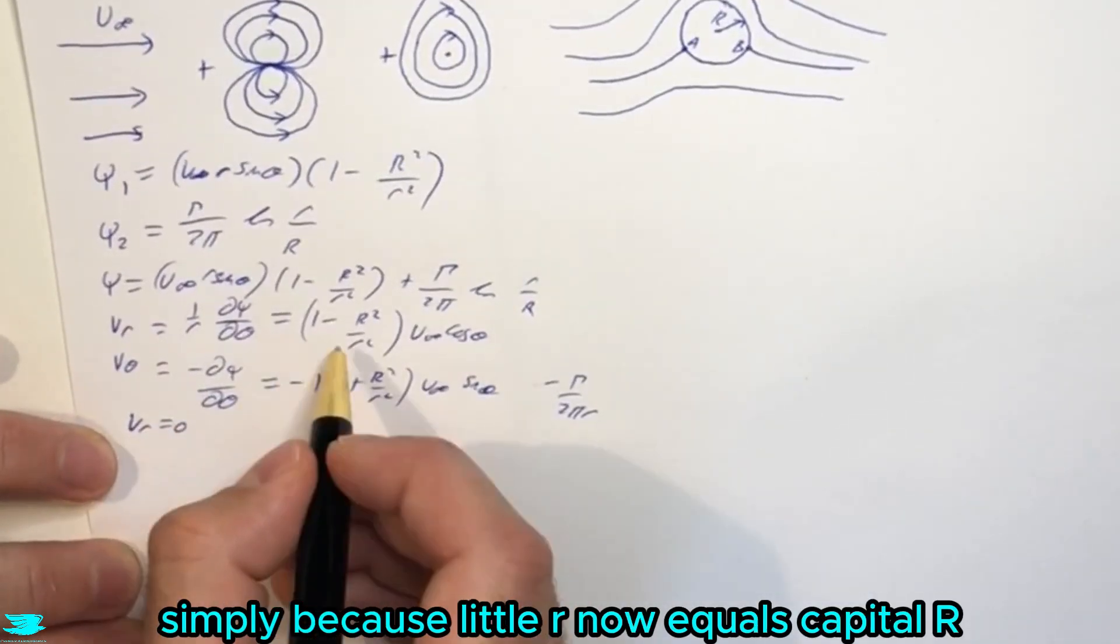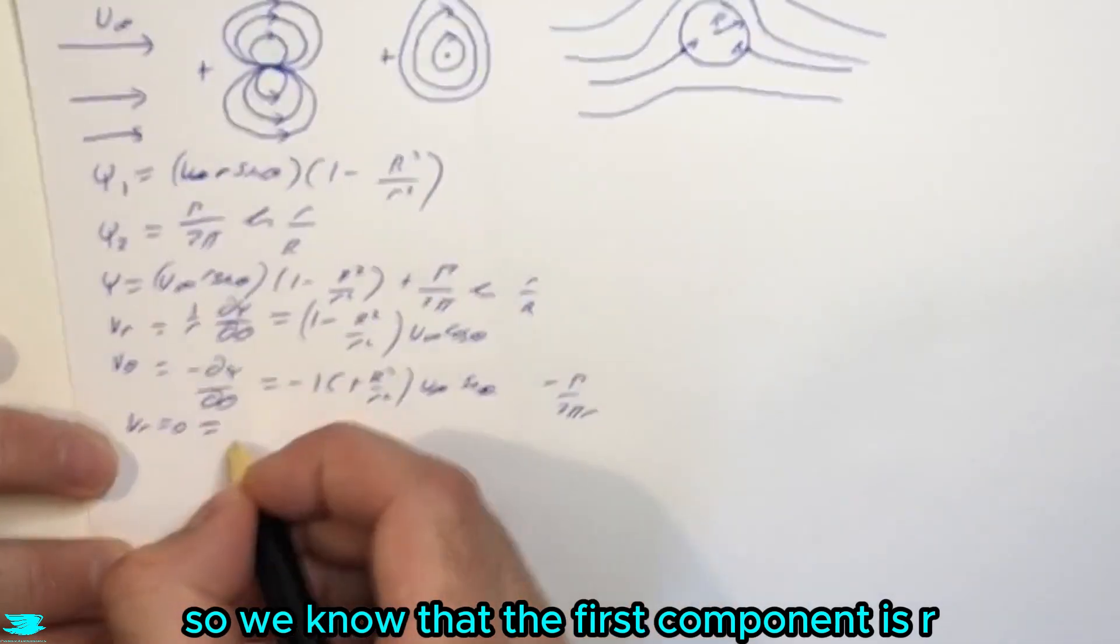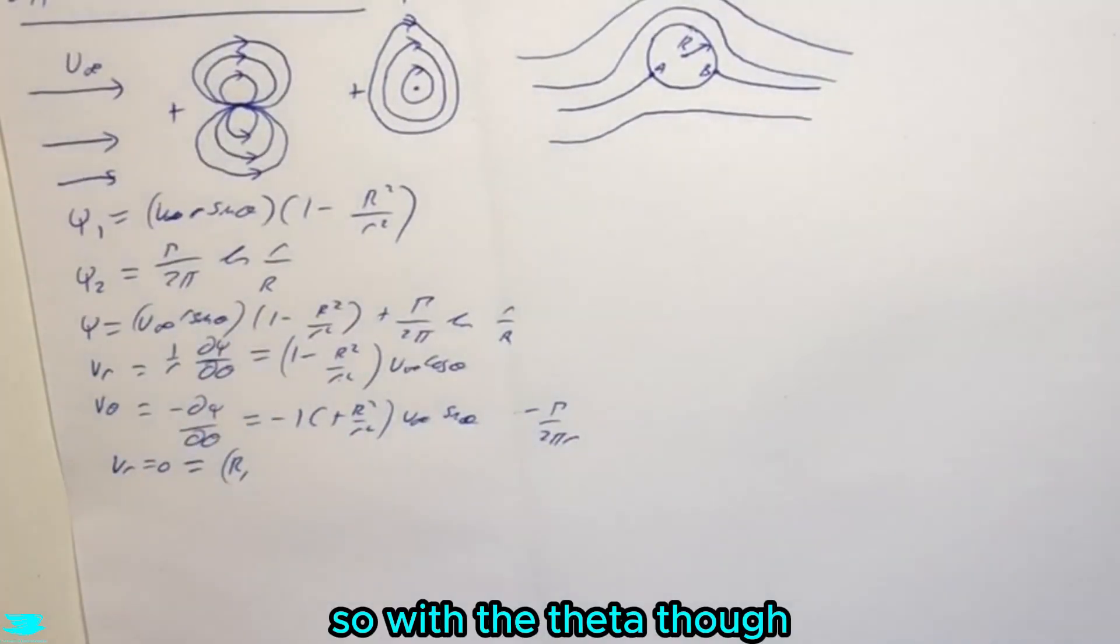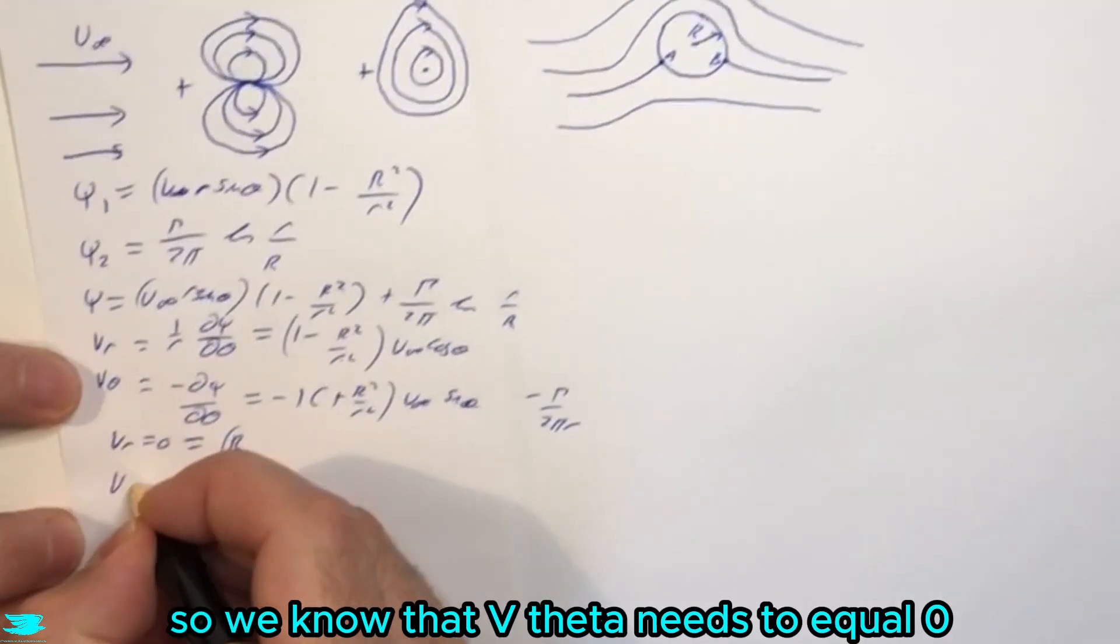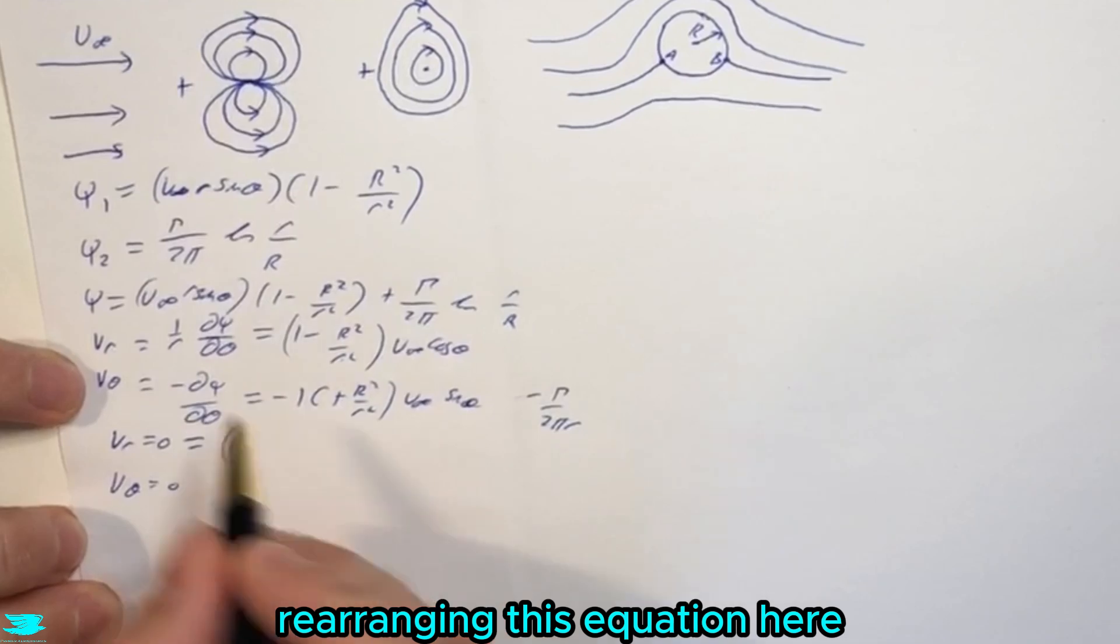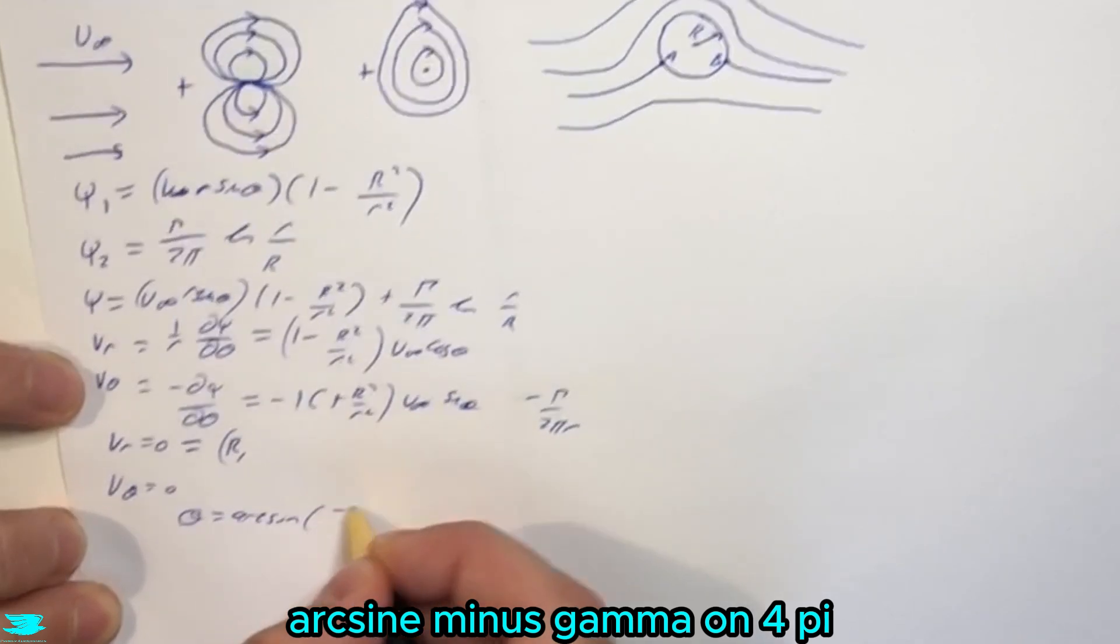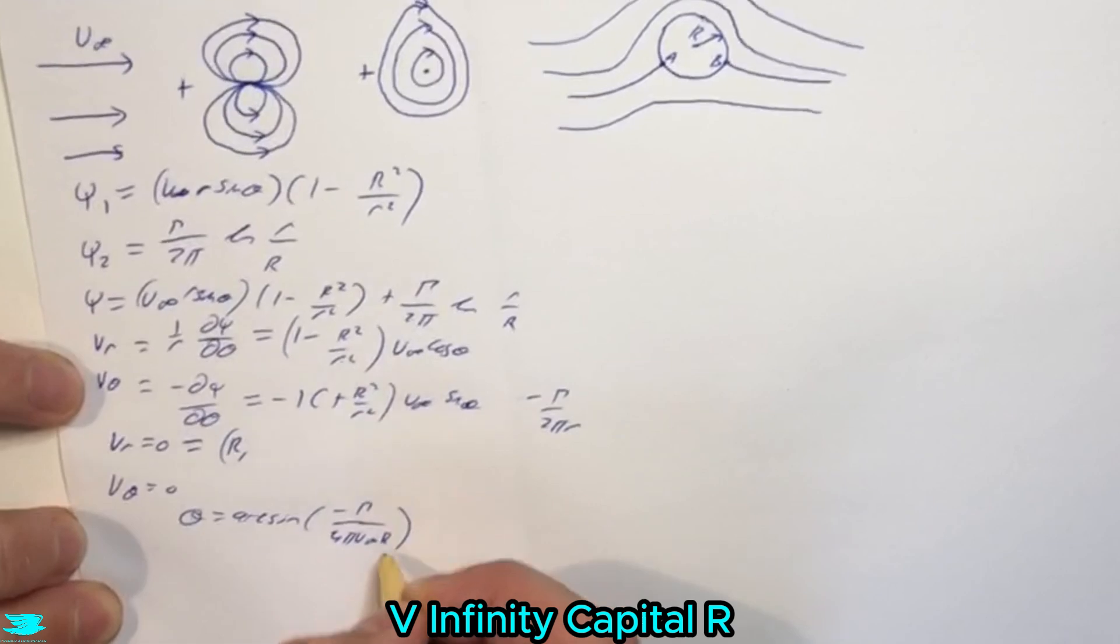So anywhere on this surface, we know that the vr component, this component, is going to be zero. So vr equals zero, simply because little r now equals capital R, so that goes to zero, and the entire thing goes to zero. So we know that the first component is r, and we need to know what the theta components are. So with vtheta, though, we have a little bit more of a complicated situation. So we know that vtheta needs to equal zero for the stagnation points.